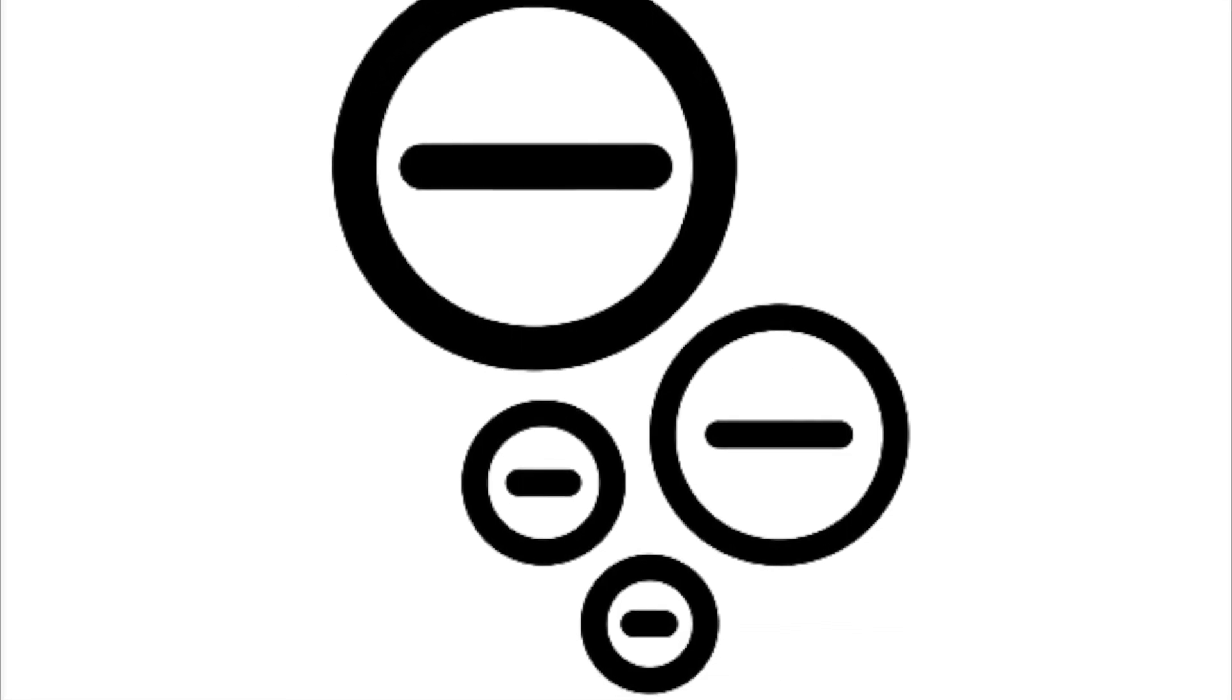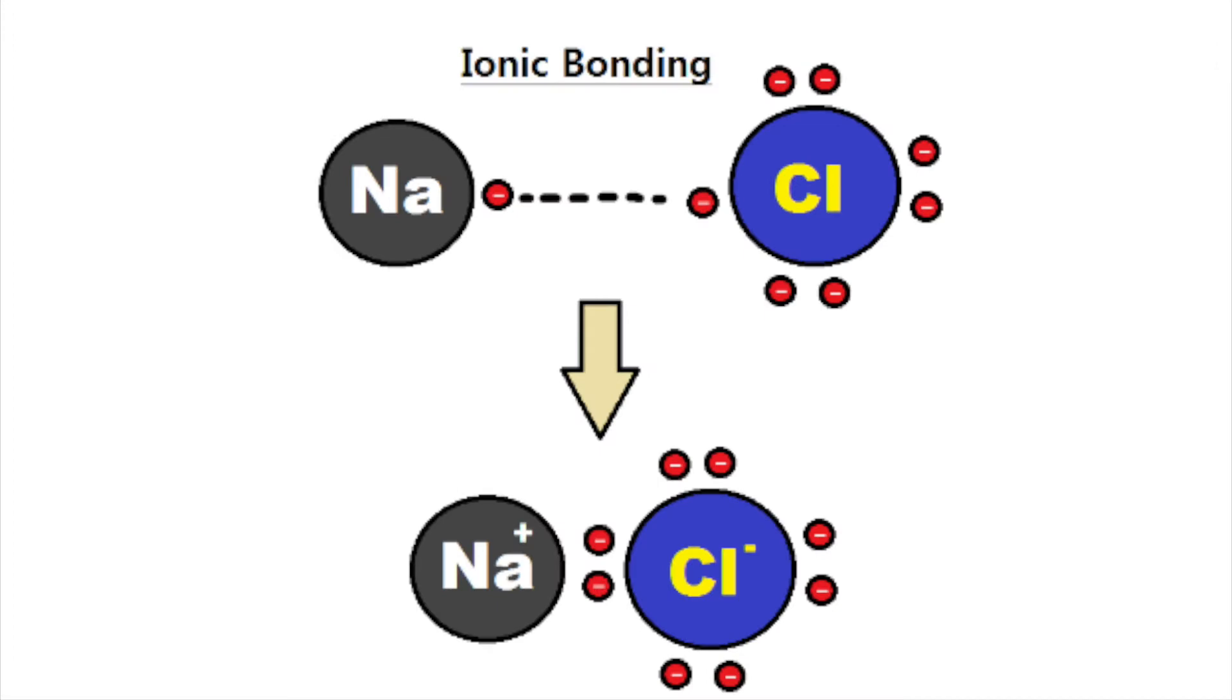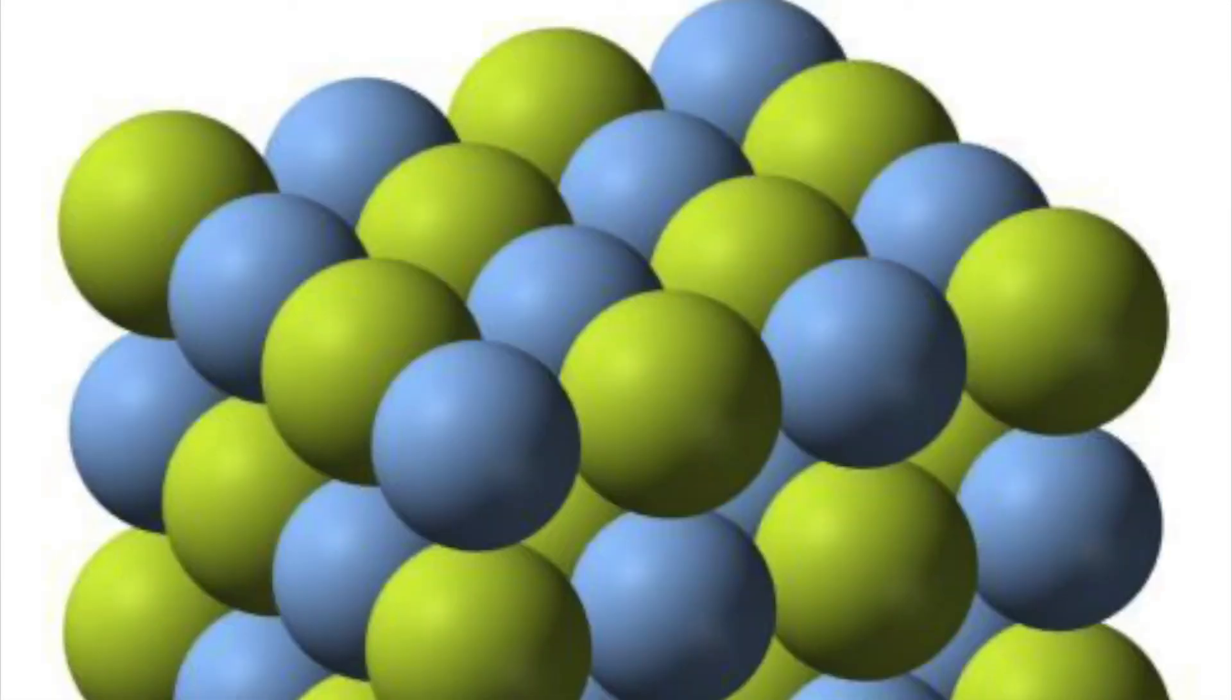The ions formed are held next to each other by strong forces of attraction between oppositely charged ions. This electrostatic force of attraction, which acts in all directions, is called ionic bonding. The ionic bonds between charged particles result in an arrangement of ions called a giant structure or a giant lattice, and this can be seen in a video I'll link down below.